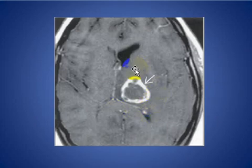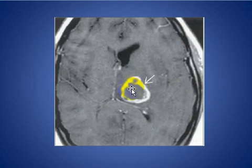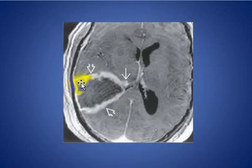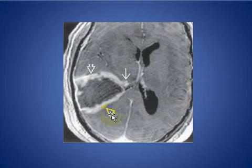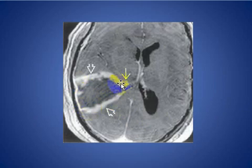Here we see T1-weighted MRI with an enhancing mass in the left thalamus, deeply located with necrosis, histologically proven glioblastoma multiforme. Another case shows a large glioblastoma multiforme with subependymal involvement, meningeal enhancement, central necrosis, and a vigorous enhancing wall.